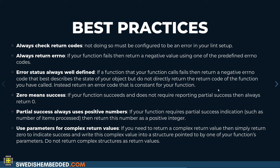The best practices of using return codes: you should always check return values — that's a given, but it's also something very rarely done in practice. Any function that returns a status, you should always check its return value. You should always return errno on error, using one of the standard codes and not something custom. You should always have a well-defined error status, and you should always return zero on success.